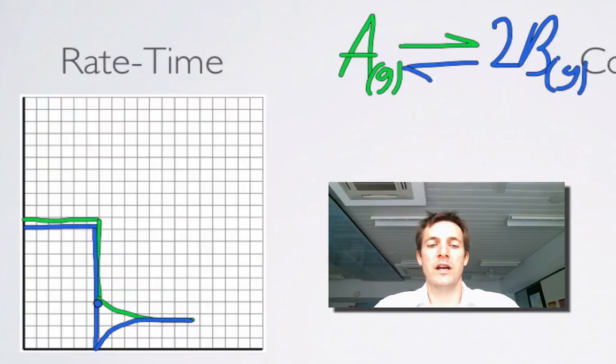So we've got a forward reaction going faster than the backward reaction. Once the change is made, that's going to produce more B. And then as the A gets used up, that reaction decreases in rate. And the forward reaction, because more B is forming, is increasing in rate until they equal one another.